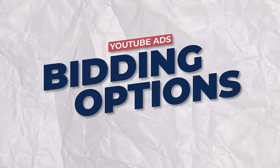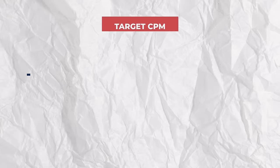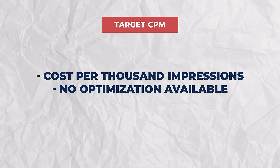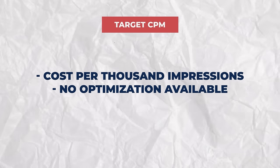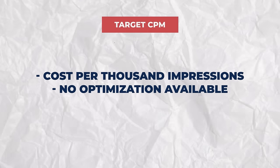Let's figure out how you're going to be charged when running ads. Google AdWords is an auction-based platform — you put down a bid of what you're willing to pay for your ad to be seen. There are four main bidding options. First is target CPM, which is a bid you set for 1,000 impressions. There's no optimization with this method, so we absolutely recommend against using it.